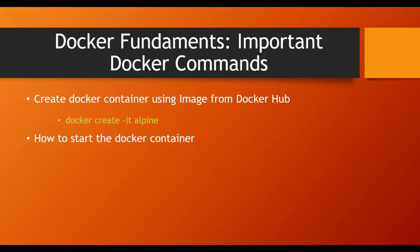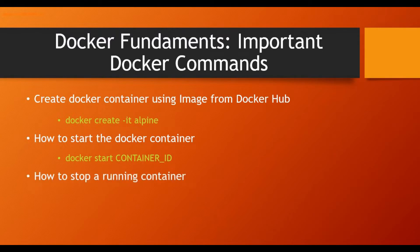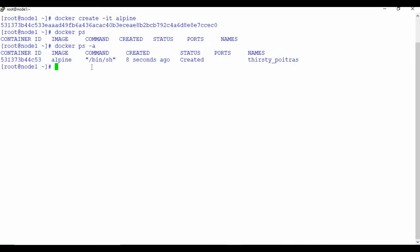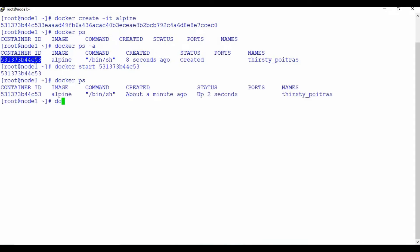Once you create a container, you need to know how to start it. The command is docker start followed by the container ID. To stop a running container, use docker stop and the container ID. Let me demonstrate: after using docker create, I run docker start with the container ID, and docker ps confirms the container is running. Then docker stop halts it.